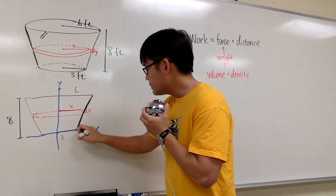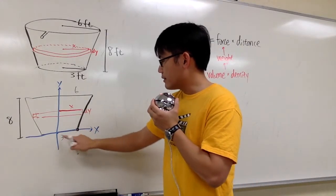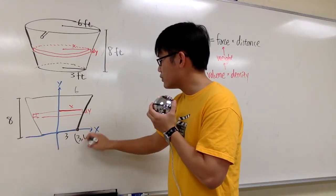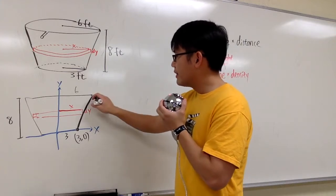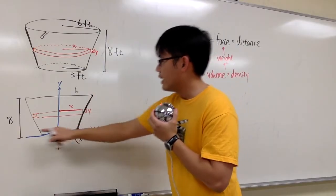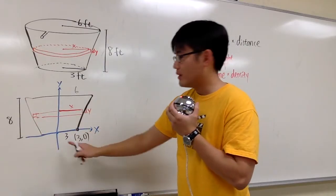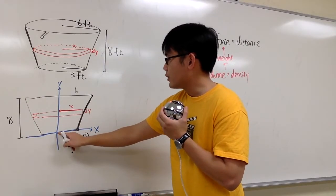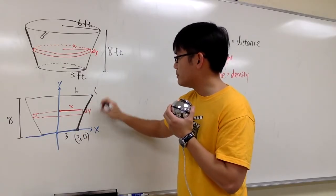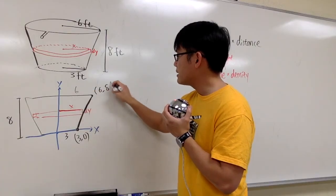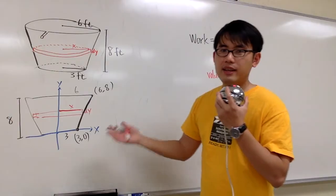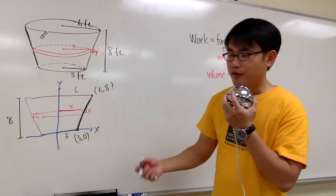In other words, this point, based on the measurements that we have, must be (3, 0). And this point will be what? Well, we move to the right 6 units and we go up 8 units from the origin. So we go to the right 6 and up 8. That means this point must be (6, 8). Whenever we have 2 points, we can write an equation of a line. And we need the slope first.